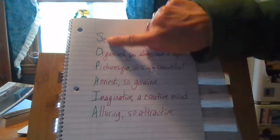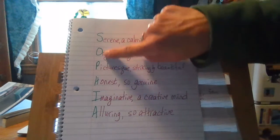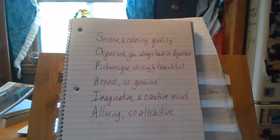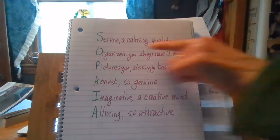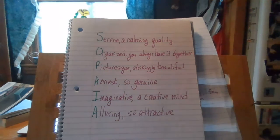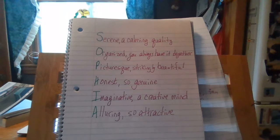An acrostic poem — Sophia — if you read the first letter of each line going down the page, you'll see the name Sophia. And that's what makes up an acrostic poem. Each line begins with a letter of the person's name, because we're going to do names, and says something about them.